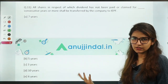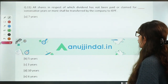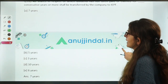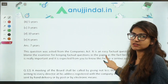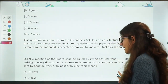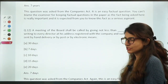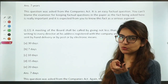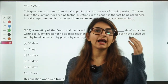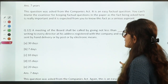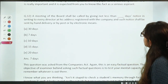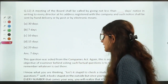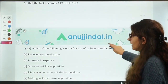All shares in respect of which dividend has not been paid or claimed for how many consecutive years — after which they go to IEPF (Investor Education and Protection Fund)? A very easy question from Companies Act. After 7 years of unclaimed dividend, shares go to IEPF. Companies Act generally has factual questions about years, number of days, and penalty amounts. Next: a meeting of the board shall be called by giving not less than how many days notice? The answer is 7 days. Factual questions are the trend from Companies Act.